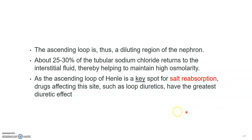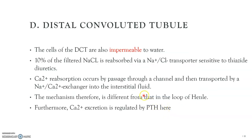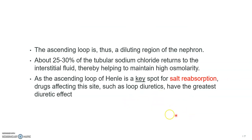So this is where the loop diuretics have the greatest diuretic effect. Because the ascending loop of Henle is the main spot for sodium chloride reabsorption, the drugs that affect this site will have the greatest diuretic effect. Since the loop diuretics mainly act on the loop of Henle, they will have the greatest diuretic effect.